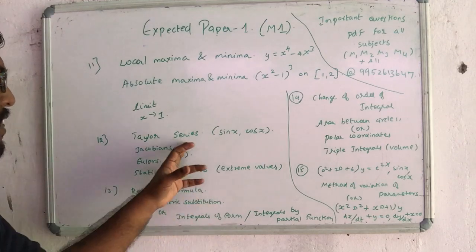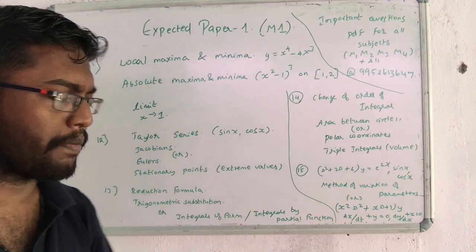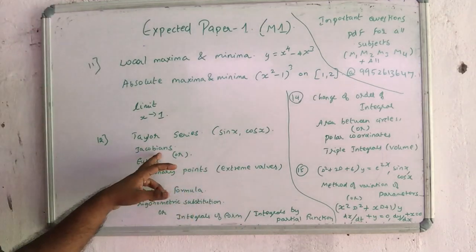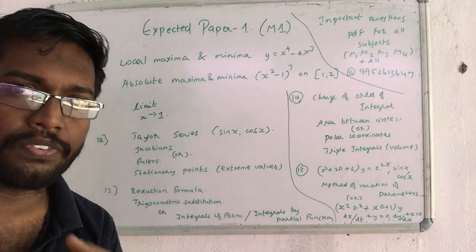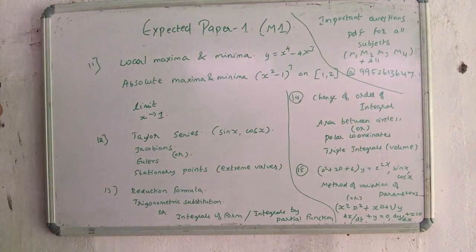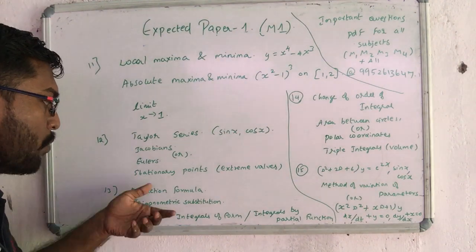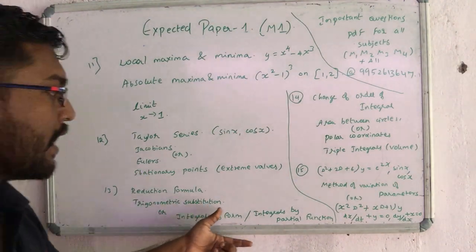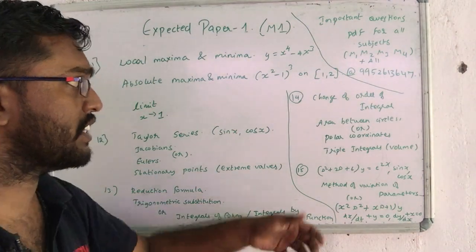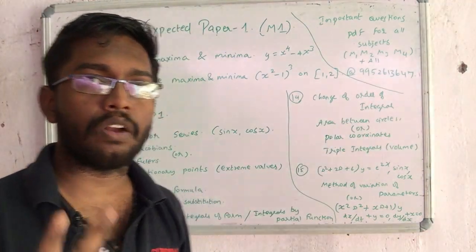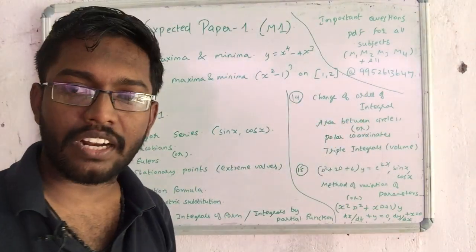In the second unit, you can use a model in Taylor series and Jacobian. Never use the Stationary Points and the Extreme Values. You can use these three. Reduction Formula and Trigonometric Substitution. You can use the Integrals of the Form — integration by partial fractions. To change the order of integration, a very important topic is to find the area between circles.